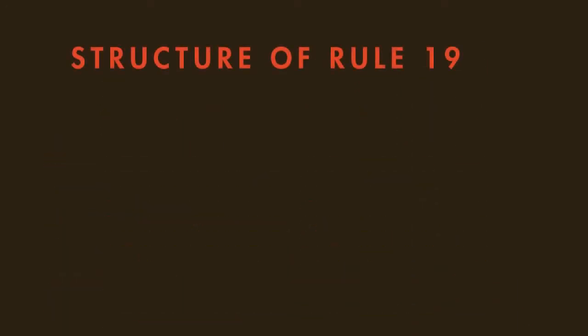Therefore, we see that there is a structure to Rule 19 which has three basic points. For Point 1, we ask whether a party is necessary. If yes, then we continue to Point 2.